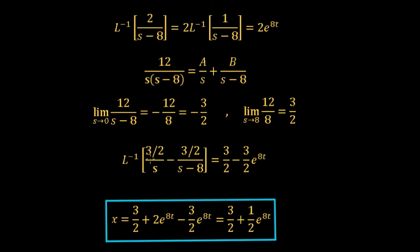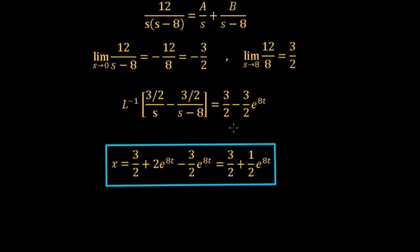Substituting the values, 12/[s(s-8)] becomes (3/2)/s minus (3/2)/(s-8). The inverse Laplace transform of (3/2)/s is 3/2, and the inverse Laplace transform of (3/2)/(s-8) is (3/2)e^(8t). Adding all terms together: 3/2 plus 2e^(8t) minus (3/2)e^(8t) equals 3/2 plus (1/2)e^(8t). So the solution to the differential equation is x = 3/2 + (1/2)e^(8t). In the next video we'll go through some examples with solutions. Thank you for listening, and goodbye.